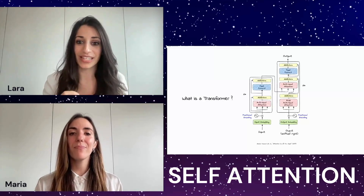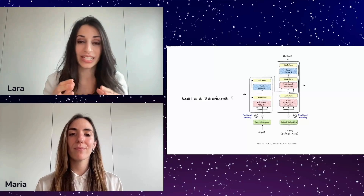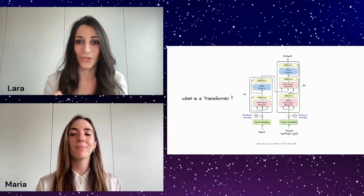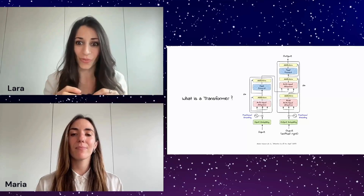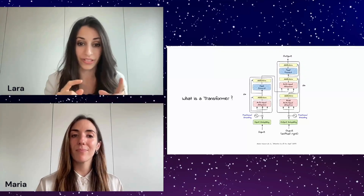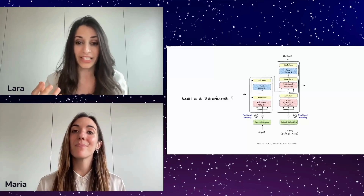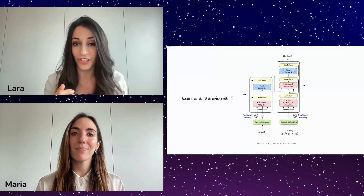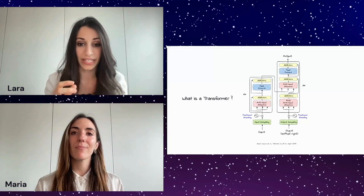So imagine that you're reading a sentence. Instead of reading each word one by one, what a transformer is able to do is look at all of the words at once and then decide which ones it's going to pay more attention to based on the context. That makes transformers really efficient for capturing complex relationships in data.